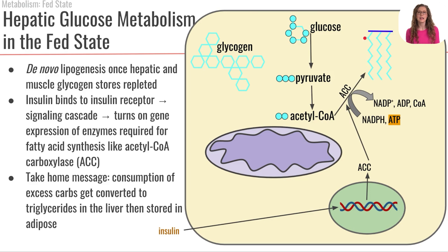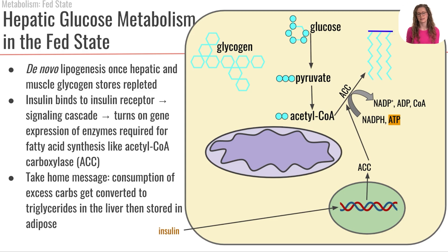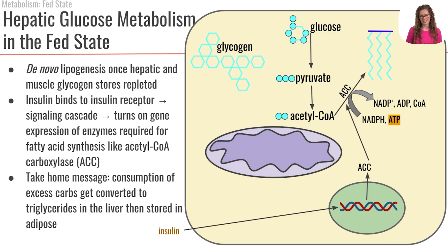ACC is an enzyme required to take acetyl-CoAs and build them together to make fatty acids in the process of lipogenesis. The take-home message is that when we consume excess carbs that can no longer be converted into glycogen because our glycogen stores are repleted, those excess carbs can be converted into triglycerides in the liver. Since the liver has limited ability to store triglycerides — excess storage leads toward steatosis — those triglycerides are exported from the liver. Overall, excess carbohydrates in the liver are converted into fats through lipogenesis.